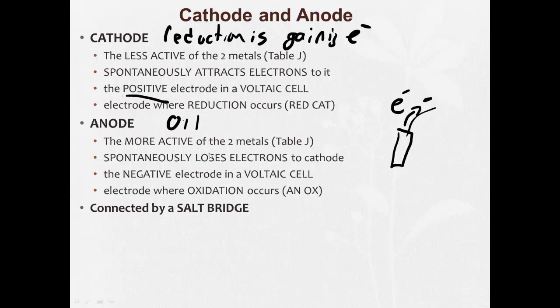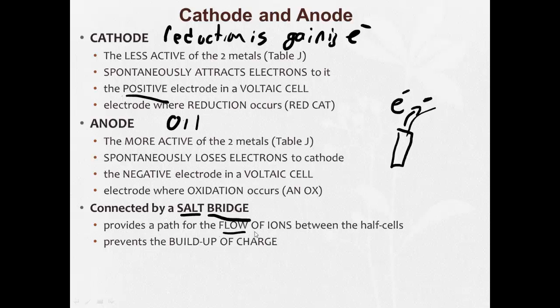Both of these half cells are connected by a salt bridge. Got to memorize this. You'll be asked a question on just about every Regents where there's any type of question about voltaic galvanic cells. What's the purpose of the salt bridge? It provides a path for the flow of ions between the half cells. It prevents the buildup of charge on one side or the other.